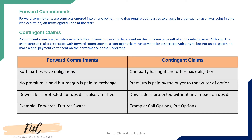Forward commitments are a kind of deal in which two parties agree to do a transaction at a later date at a pre-agreed upon price. A contingent claim is also similar — two parties make a deal today for a transaction in the future — however, the difference is that in a contingent claim one party has a right and the other party has an obligation, whereas in a forward commitment both parties have the obligation.